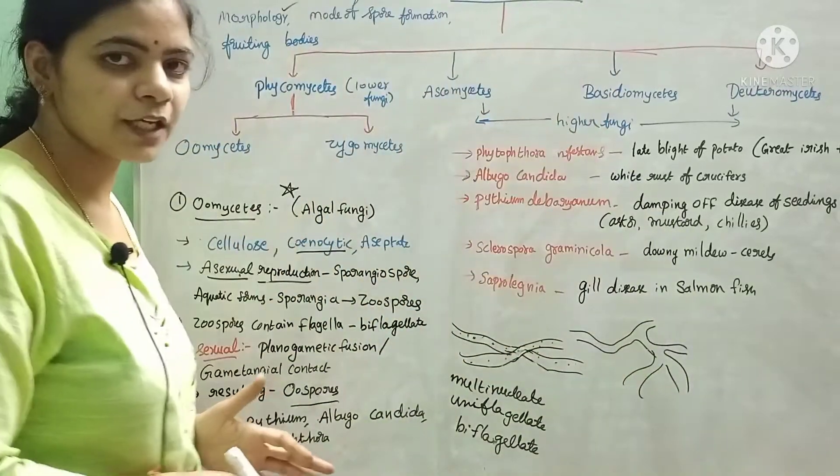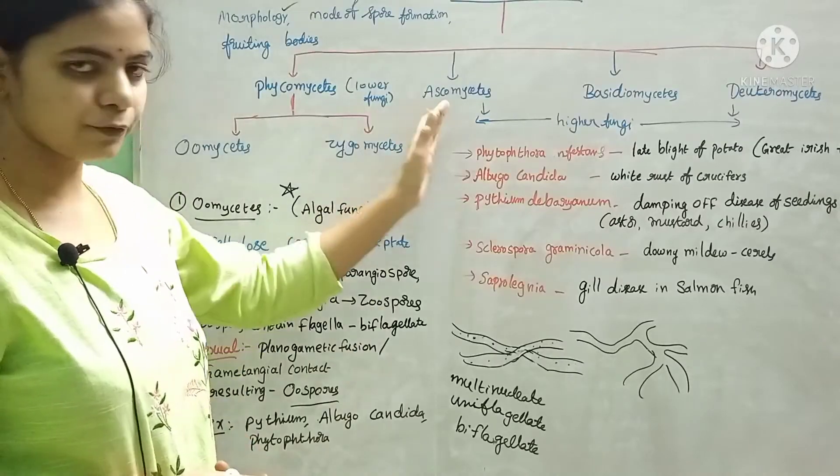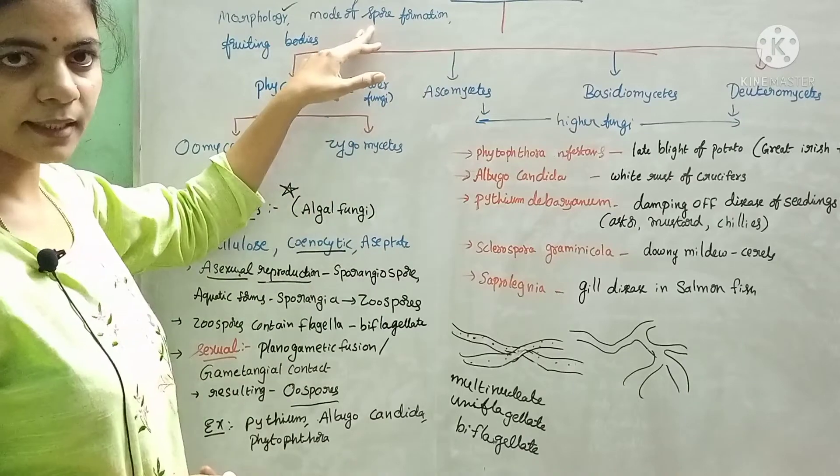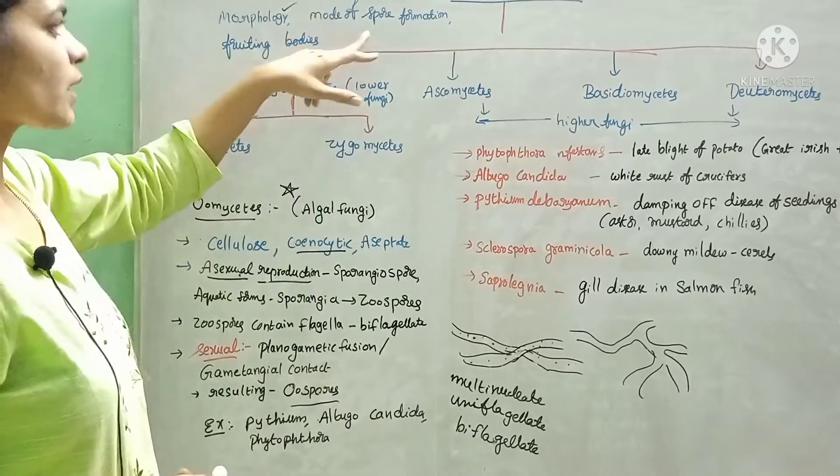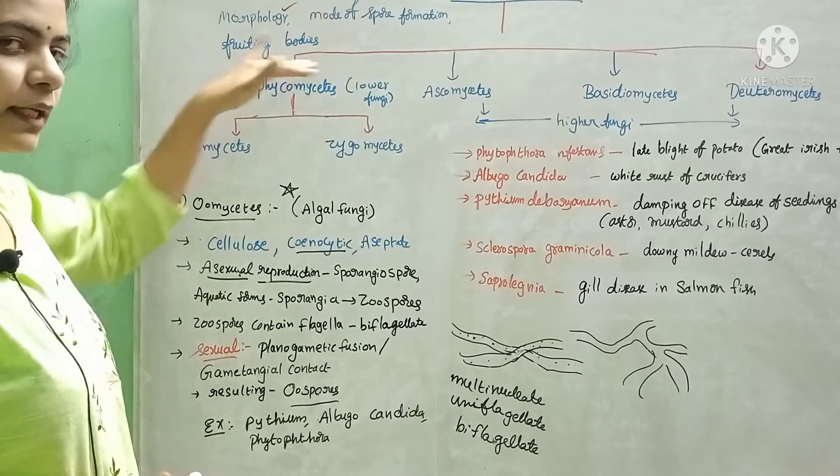If you see the classification of fungi, the fungi were mainly classified into four groups depending upon three characters: morphology, mode of spore formation, and fruiting bodies.